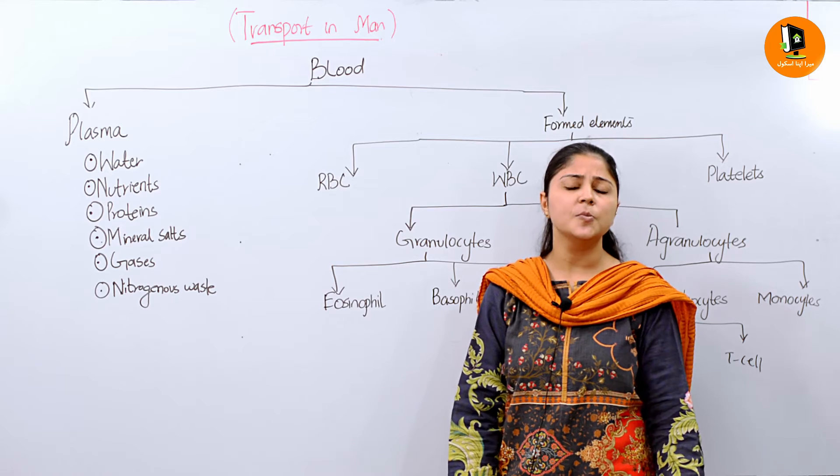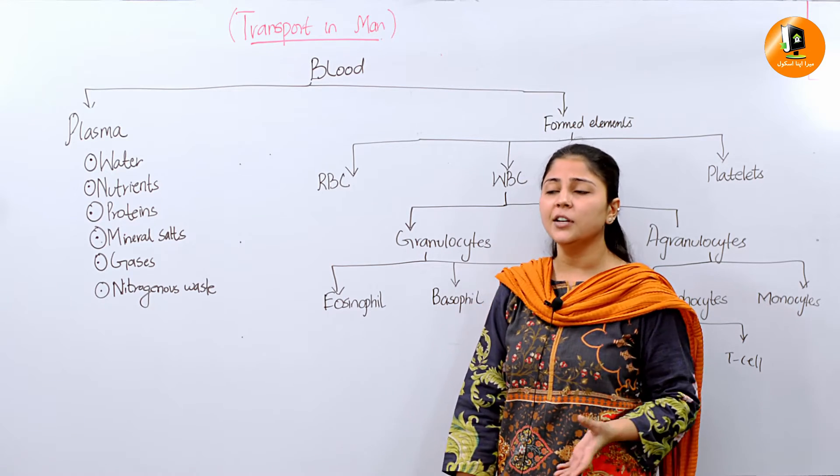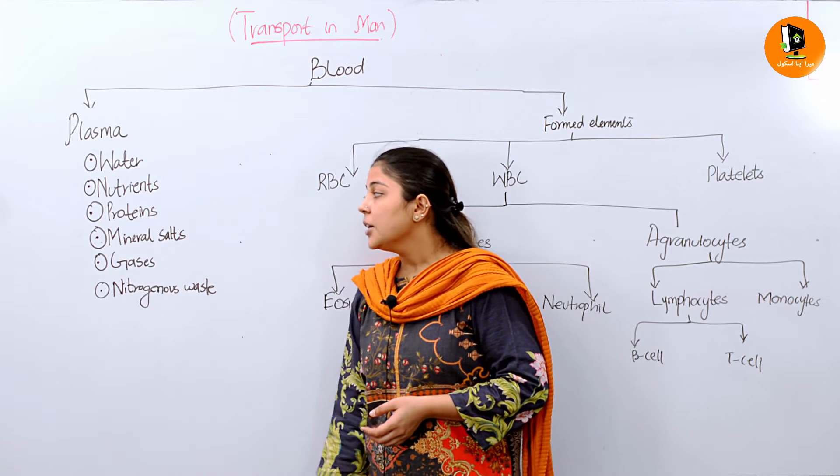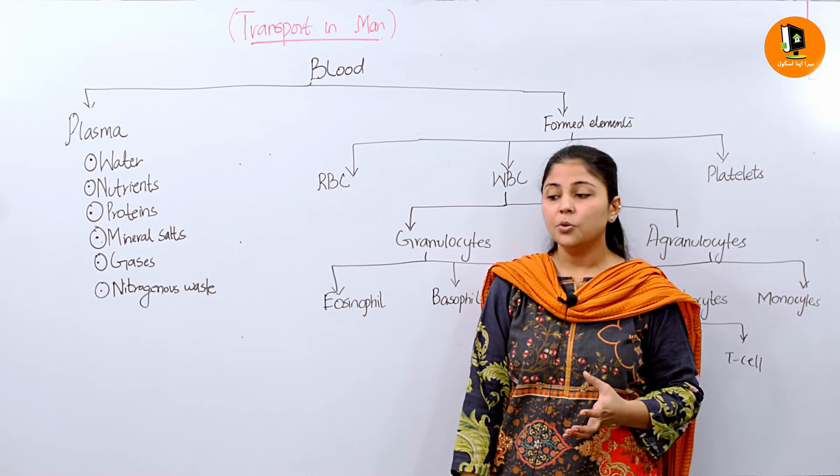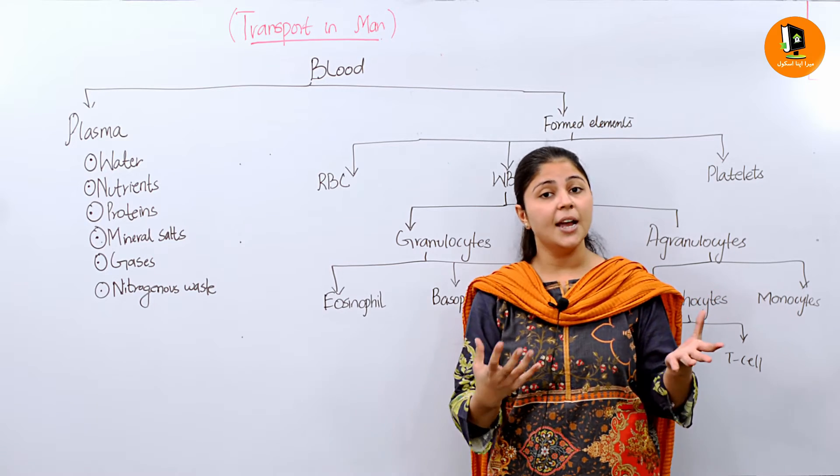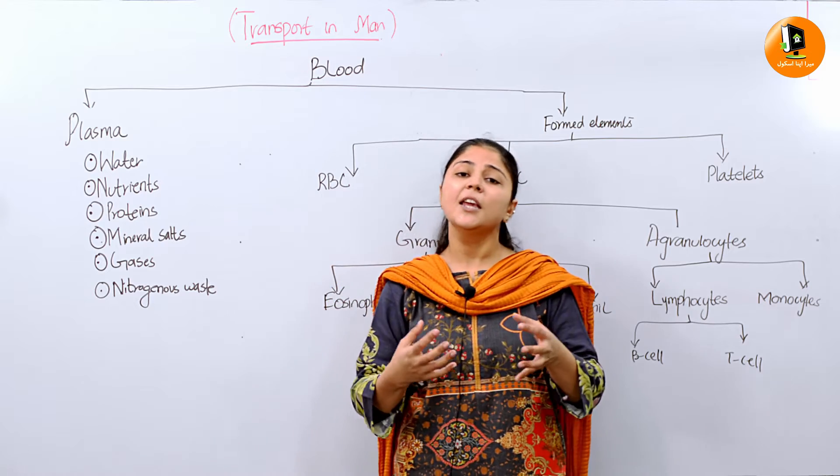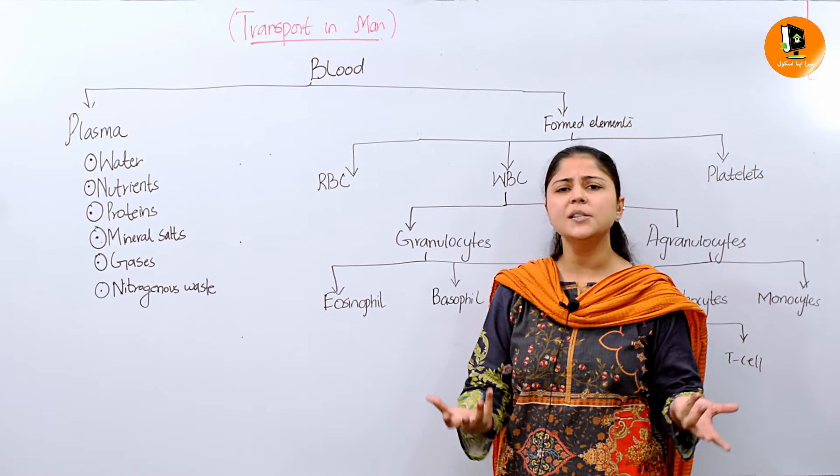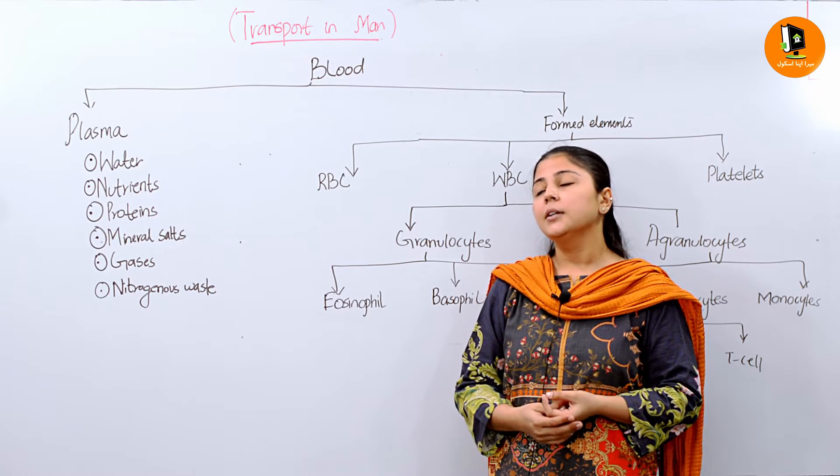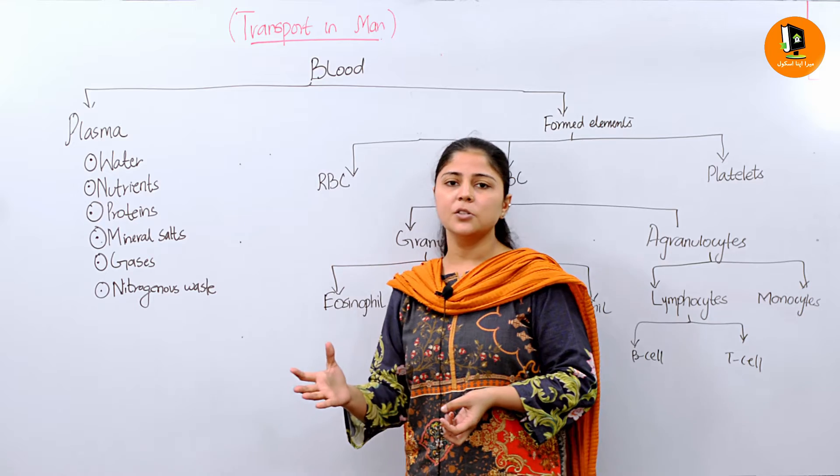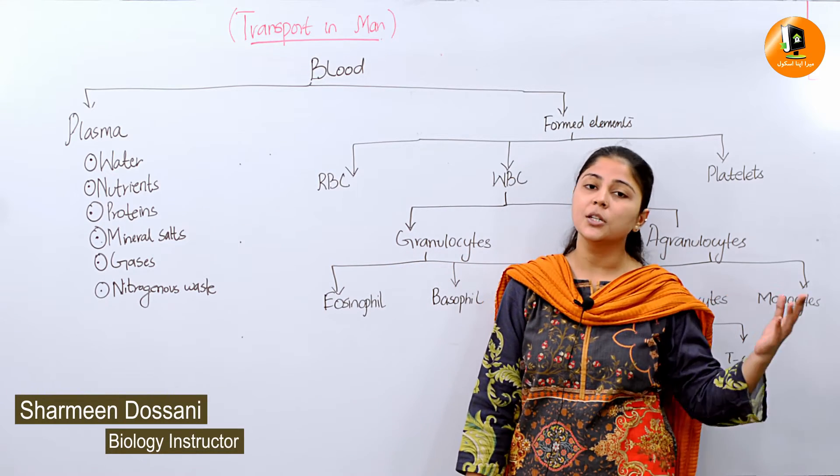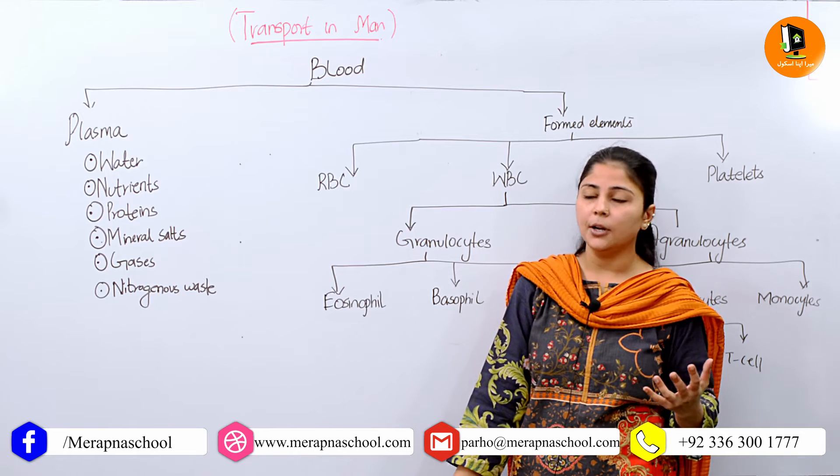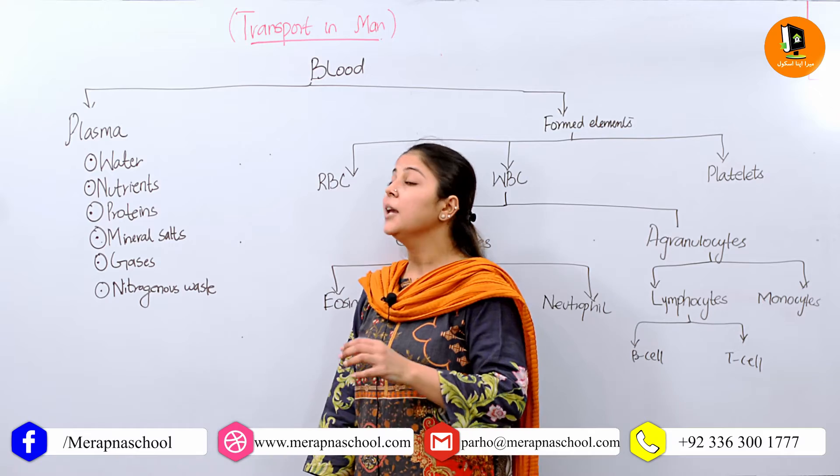If we talk about plasma, 90 percent is water and other nutrients. You can have organic molecules like carbohydrates, proteins, fats, vitamins, calcium, minerals, and other inorganic substances like phosphate, sulfates, and nitrates present in the form of salts and ions. Gases are also present, especially the two gases we talk about in our body: oxygen, which we use, and carbon dioxide, which is a byproduct. These two gases are present in plasma.